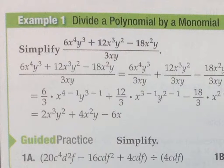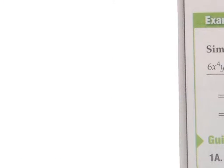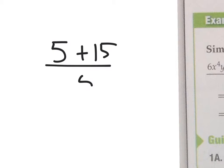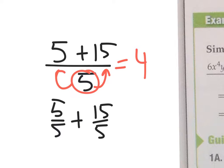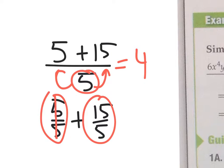Let me help you out with an easier example. Say you had 5 plus 15 divided by 5. Because there's a single number in the denominator, you are able to split this 5 to both terms and write it as 5 over 5 plus 15 over 5. You could take this 5, put it underneath the 5 and underneath the 15, and get 5 over 5 plus 15 over 5. That becomes 1 plus 3, which is also 4.